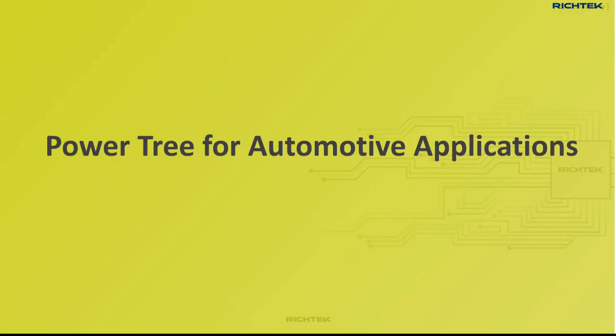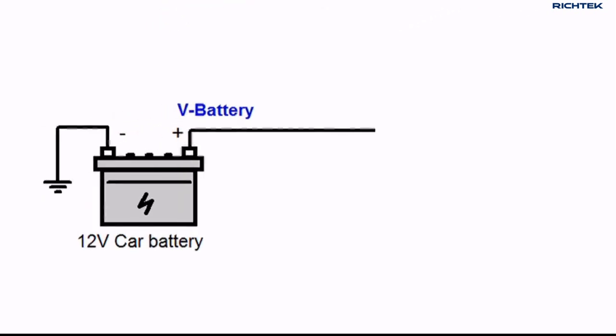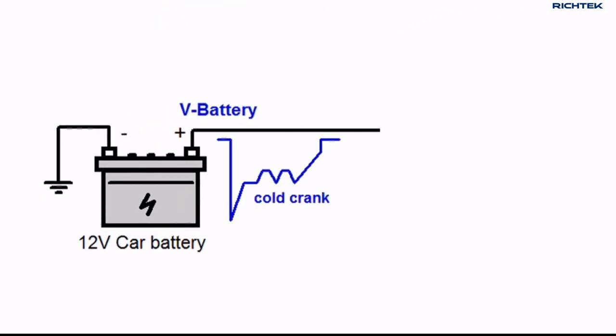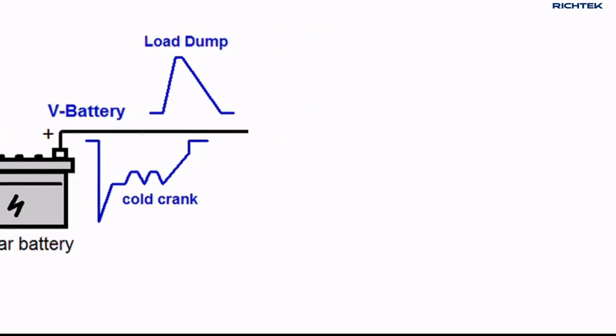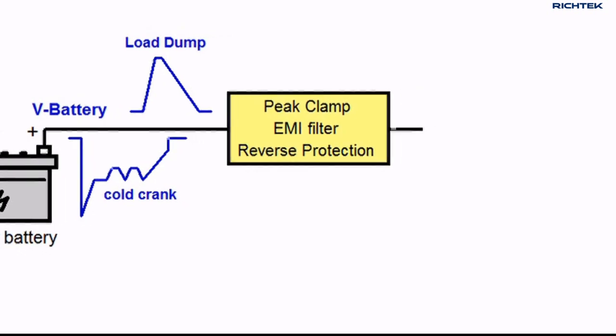A typical automotive power tree will be as following. We start with the car battery. As we have seen, this battery voltage can drop considerably during cold cranking. But it can also rise to high voltage levels when the battery is disconnected by accident while the generator is charging. We call this load dump. The next stage will normally include a peak clamp circuit, EMI filter and reverse polarity protection.